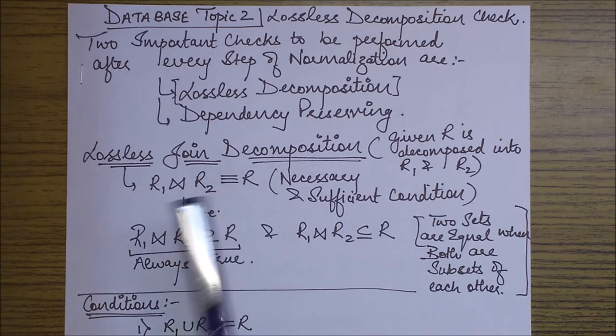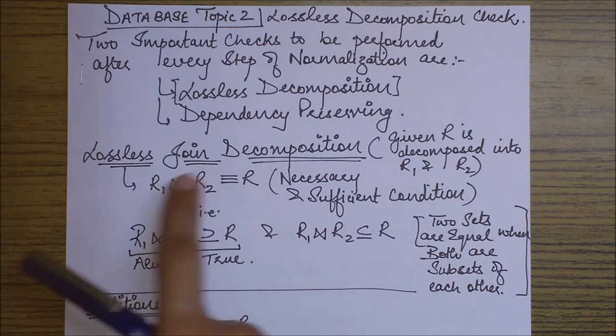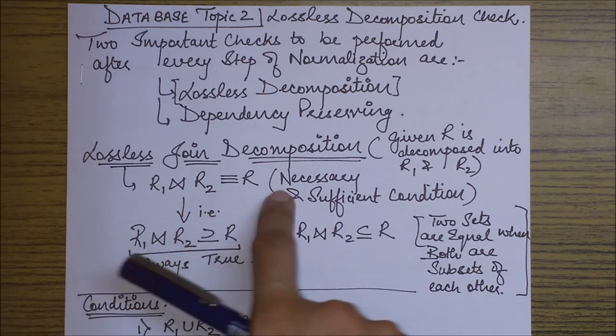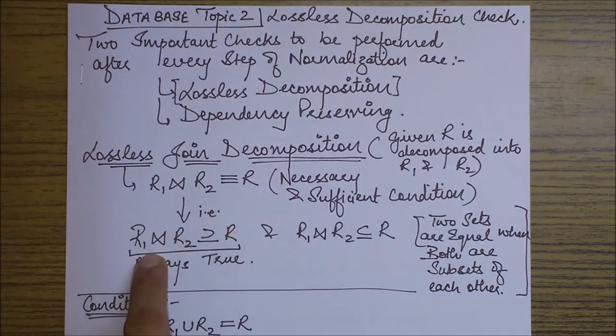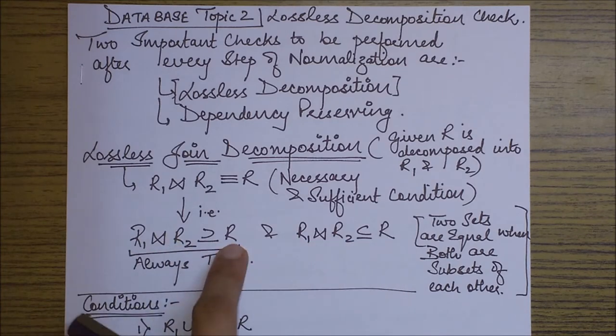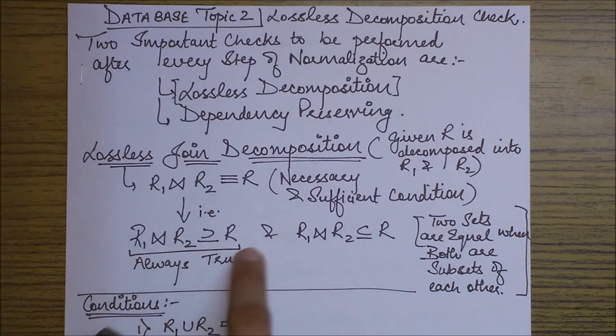Now what do I mean by the new relation R is same as the joint R1 R2? Since both the things on left hand side and right hand side are sets, when I'm saying two sets are equal, that means the left side is a subset of right side and the right side is also a subset of left side. Now you'll see that this is always true but we need to check for this.